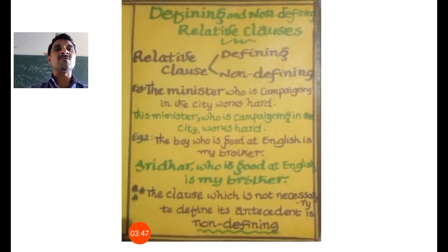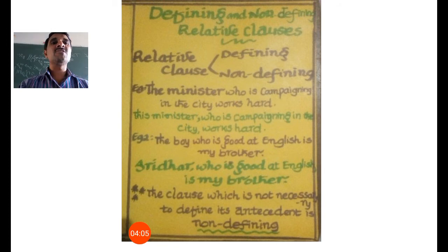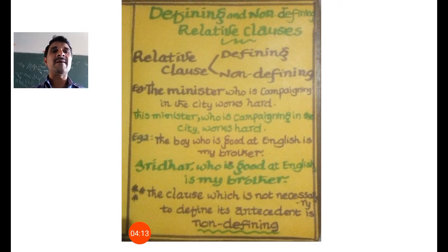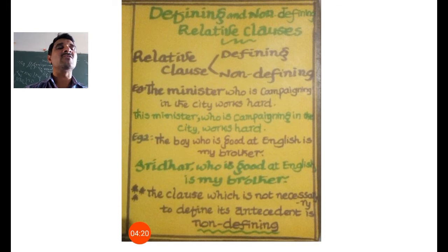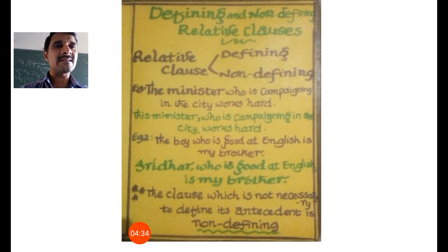Now moving to defining and non-defining relative clauses. A relative clause is of two kinds: defining and non-defining. By looking at examples, we can identify which one is defining and which one is non-defining. First: 'The minister who is campaigning in the city works hard.' Second: 'This minister who is campaigning in the city works hard.' In both sentences, 'who is campaigning in the city' is the relative clause. But the first sentence is a defining relative clause, and the second is a non-defining relative clause.